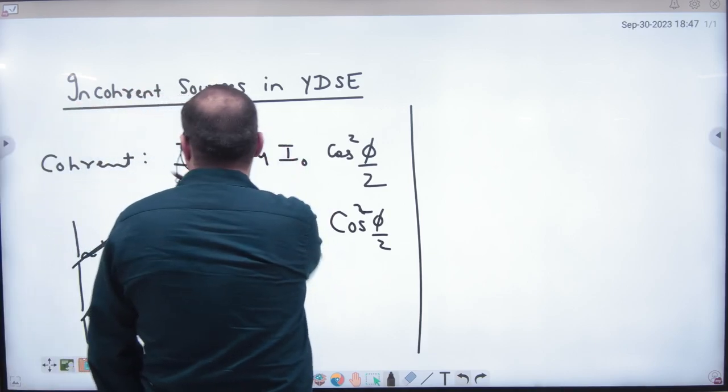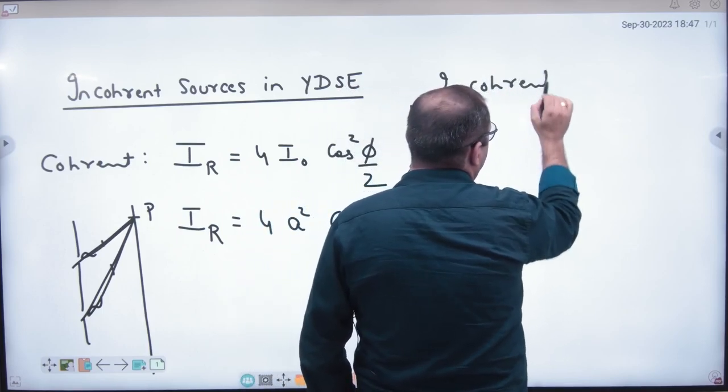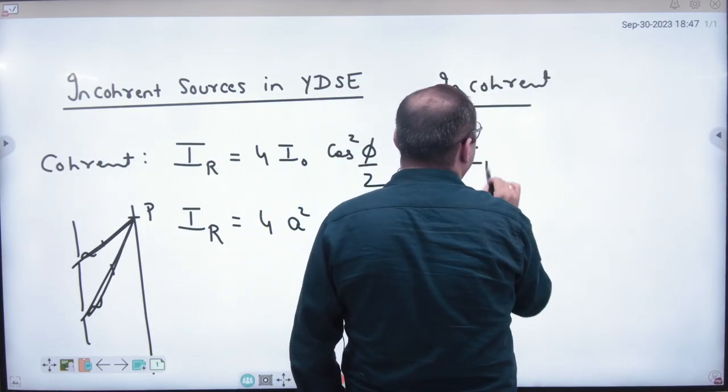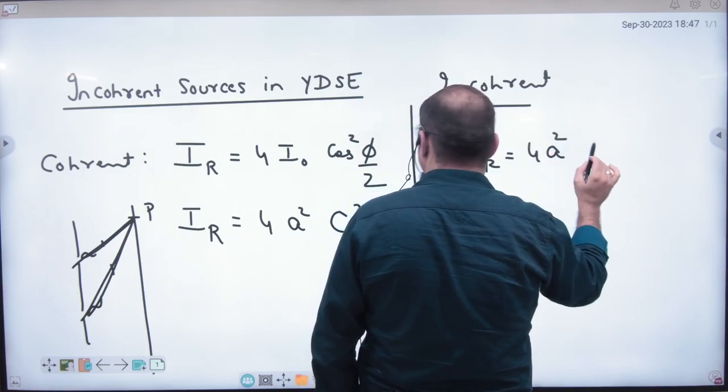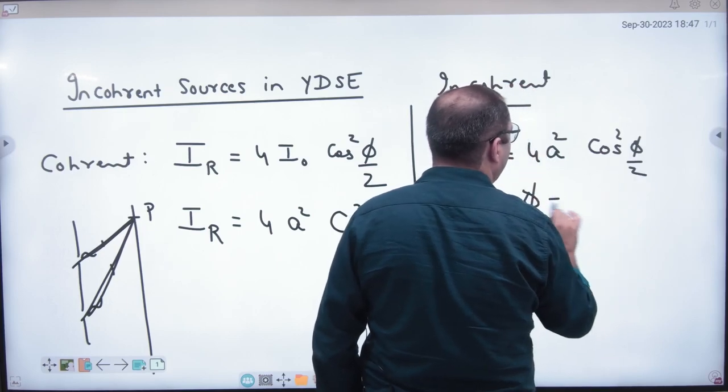So in incoherent, I have taken an incoherent example. In incoherent, if I put the same formula, resultant intensity of 4A square into cos square φ by 2, the problem is that φ is not constant.